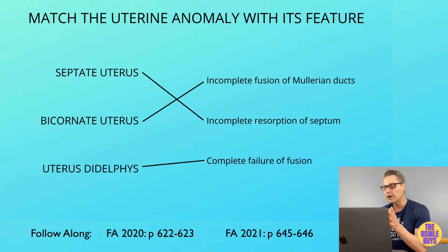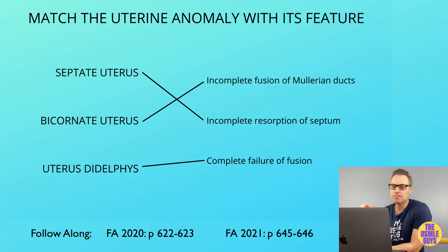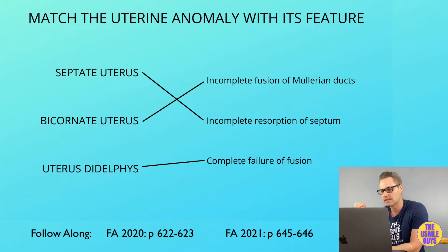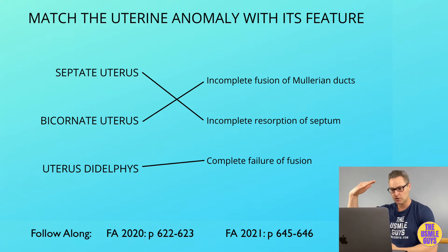The Sertoli cells will secrete Müllerian inhibitory factor (MIH), which suppresses development of the paramesonephric ducts. The Leydig cells secrete androgens that stimulate development of the mesonephric ducts. If there's an absence of Sertoli cells or a lack of MIH, there will be development of both male and female internal genitalia but male external genitalia — we call this streak gonads. A 5-alpha reductase deficiency results in an inability to convert testosterone into DHT, giving male internal genitalia but ambiguous external genitalia until puberty, when the testosterone spike causes masculinization.